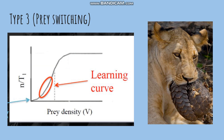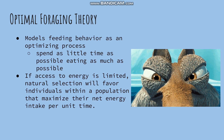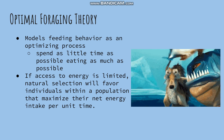Type 3 is the classic prey switching response. At low densities, feeding rates are slow at first due to unfamiliarity with prey. Efficiency increases with increased exposure. A lion doesn't normally eat an armadillo, but if their options are limited, the Type 3 model shows the learning curve of the lion to survive.